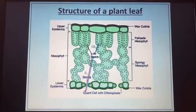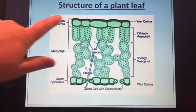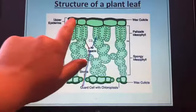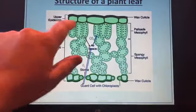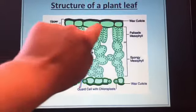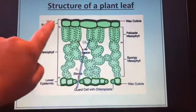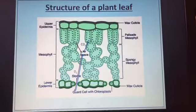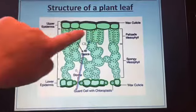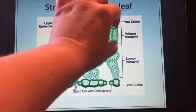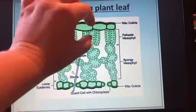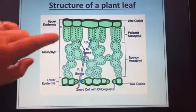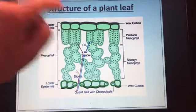Looking at the structure of a plant leaf, at the top you have the waxy cuticle, which helps to conserve water — it's a waterproof layer. You then have the upper epidermis, which is a transparent layer that allows light to pass through. You have the palisade layer, where the palisade cells are cuboidal and arranged in nice neat rows to maximize light absorption.